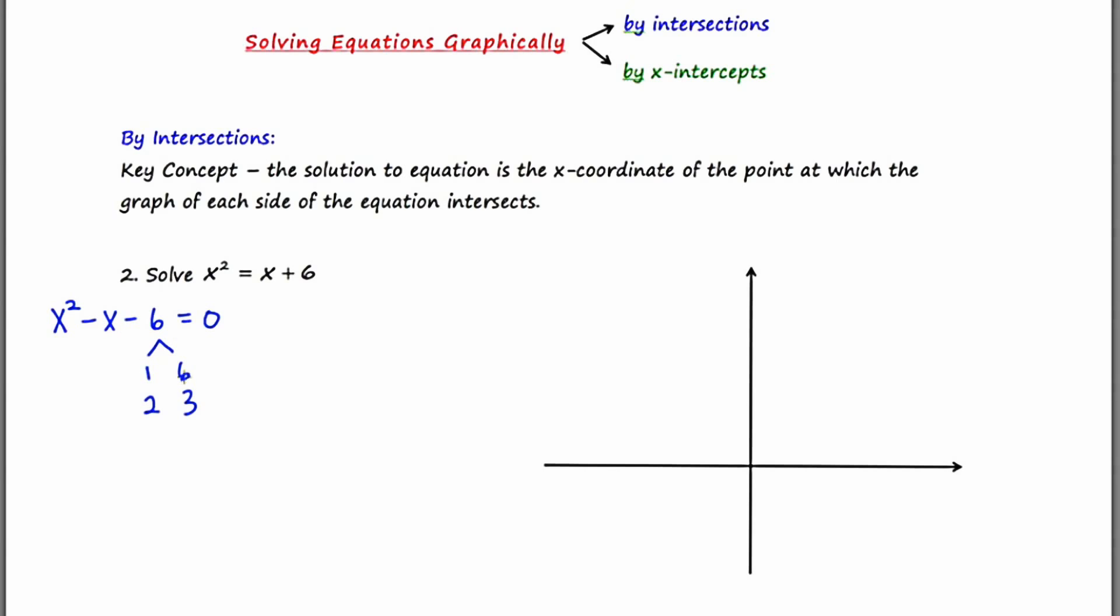Now at the same time that we want a product of six, we also want the sum to be negative one. So looking at these pair choices, these options, the two and the three are going to give me a negative one, if I make the signs positive two and negative three. This is going to give me the product of negative six, which I want at the end. And it's going to give me the sum of negative one in the middle. So this is going to suggest two factors, x plus two and x minus three.